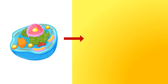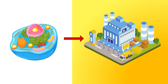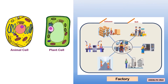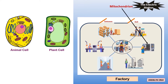In the Cell as Factory Analogy, the factory cannot operate without energy. The electric station represents the mitochondrion. It provides energy for the factory to continue to operate.